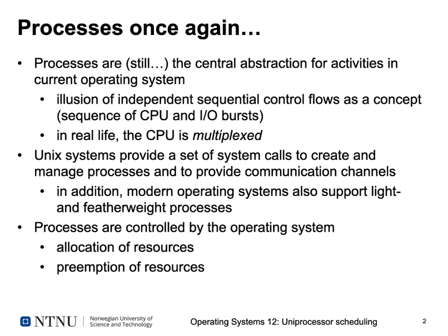In real life, we want a multiplexing of the CPU, so we want to have several processes using our CPU at the same time. Since our CPU can only execute a single machine instruction simultaneously in a single processor system, we need to switch the processor between the different processes. Unix systems provide system calls to create and manage processes, and Unix processes also have facilities to communicate and synchronize with each other.